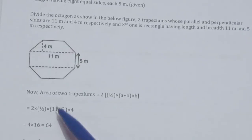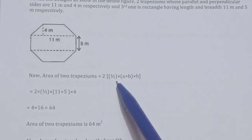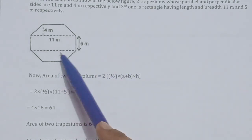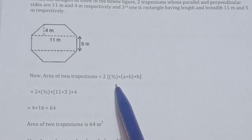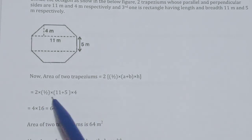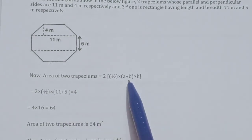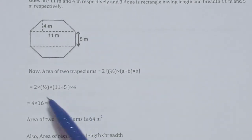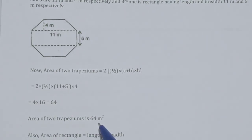Area of trapezium = ½ × sum of parallel sides × perpendicular distance. When we divide the octagon, two trapeziums are formed, so we multiply by 2. Area of two trapeziums = 2 × ½ × (11 + 5) × 4 = 64 m².